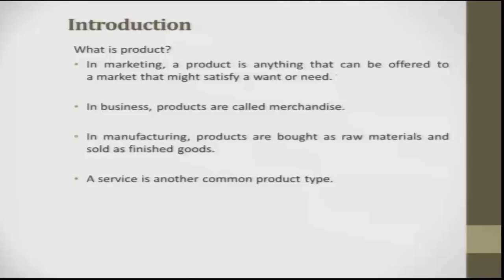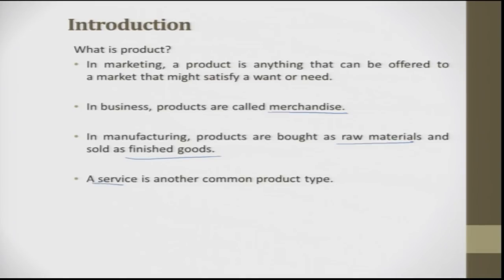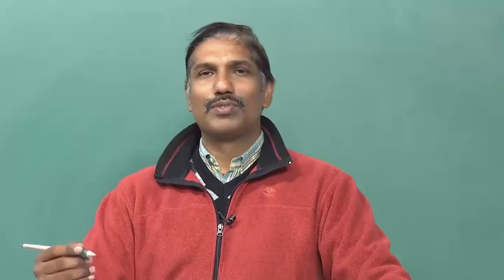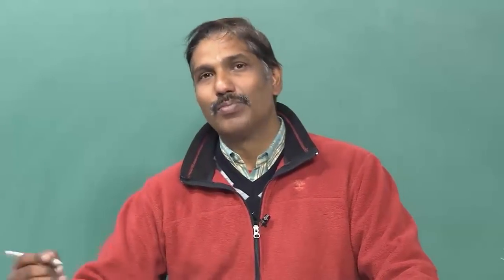In retail business, products are always called merchandise. In manufacturing, a product is bought as raw material — you add value to the raw material and convert it into finished goods. When you talk about the service sector, the product has a different definition. For example, Ola and Uber are also products wherein it is more focused towards the service segment, and they also try to achieve customer satisfaction.